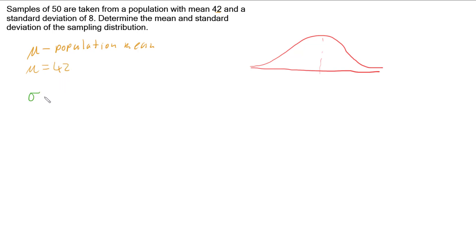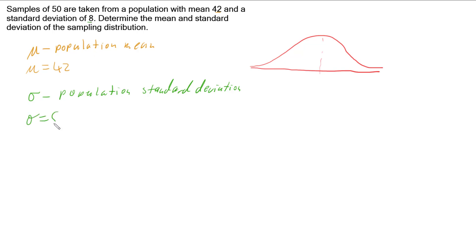We also have sigma, which is our population standard deviation, and in this case it is 8, because our population has a standard deviation of 8. We also have our sample size n, which is 50.